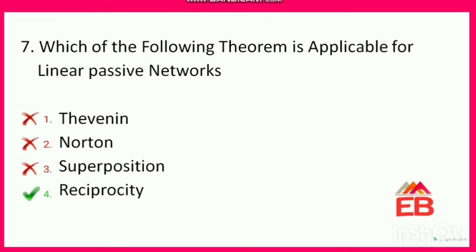Next: which theorem is applicable for linear passive networks? Options are Thevenin, Norton, superposition, or reciprocity. Thevenin theorem is applicable for linear active bilateral networks. Norton is also for linear active bilateral. Superposition is also for linear active bilateral. Reciprocity theorem is applicable for linear bilateral passive networks. So the correct option is option 4 — reciprocity theorem applies to passive networks.